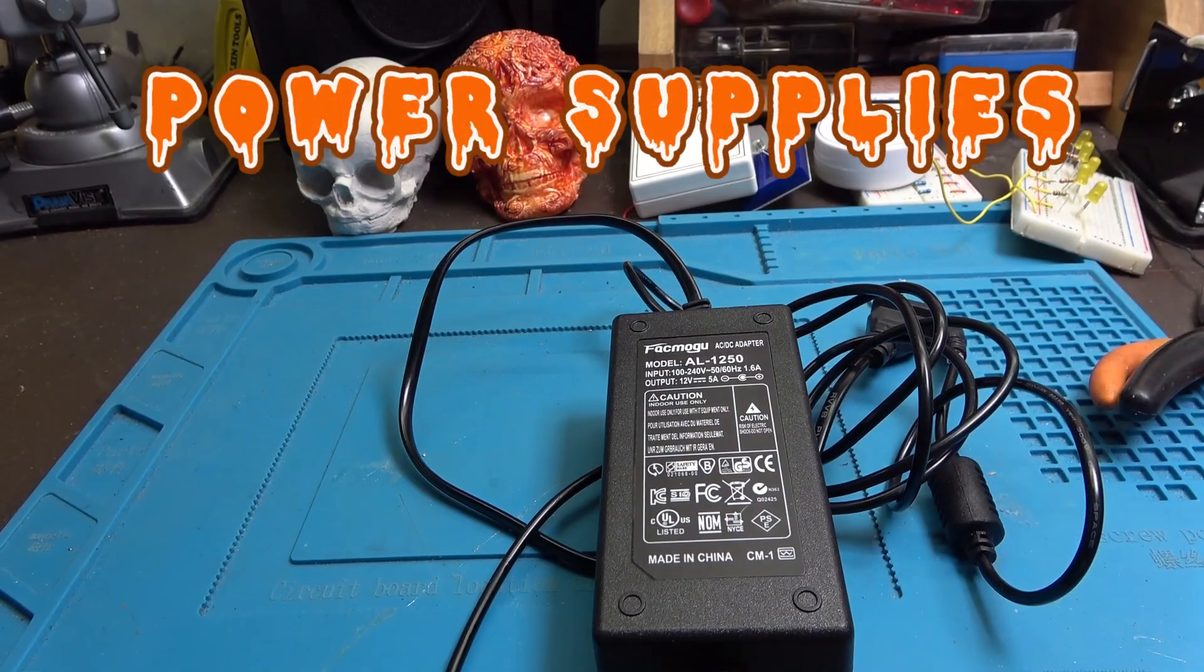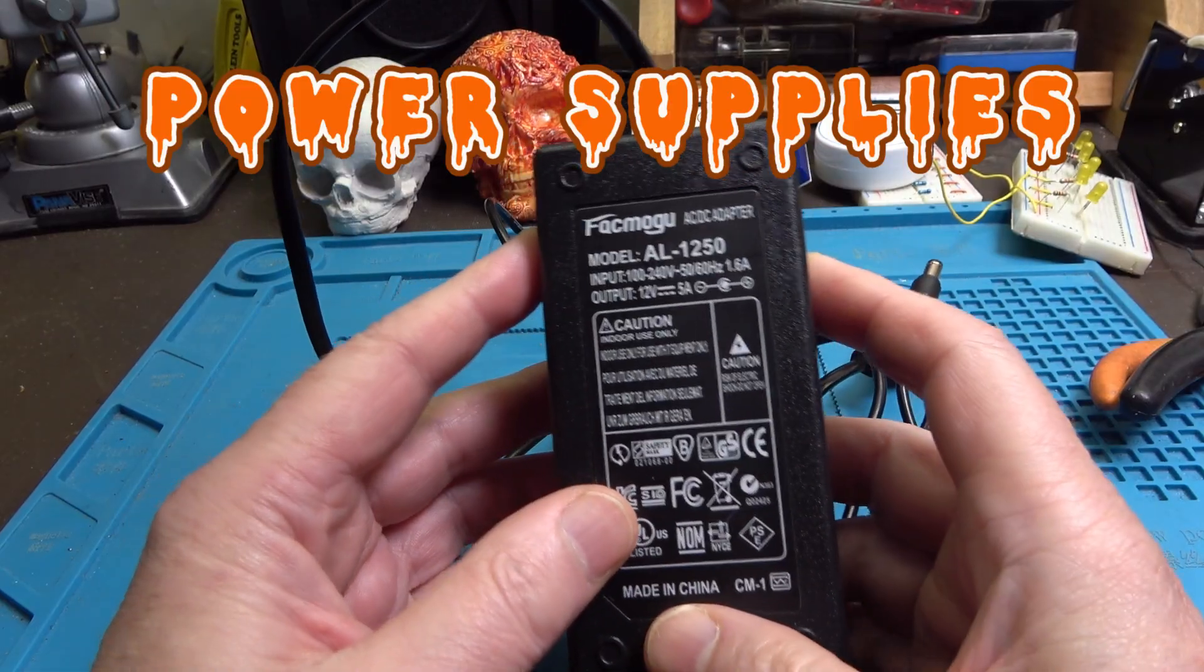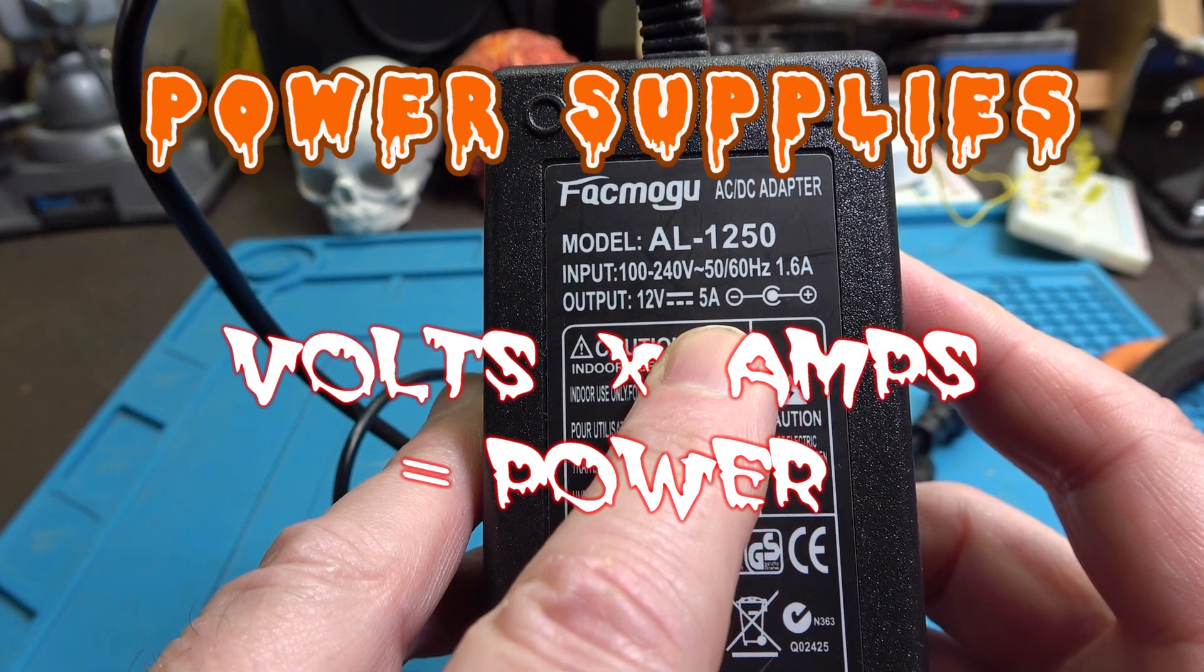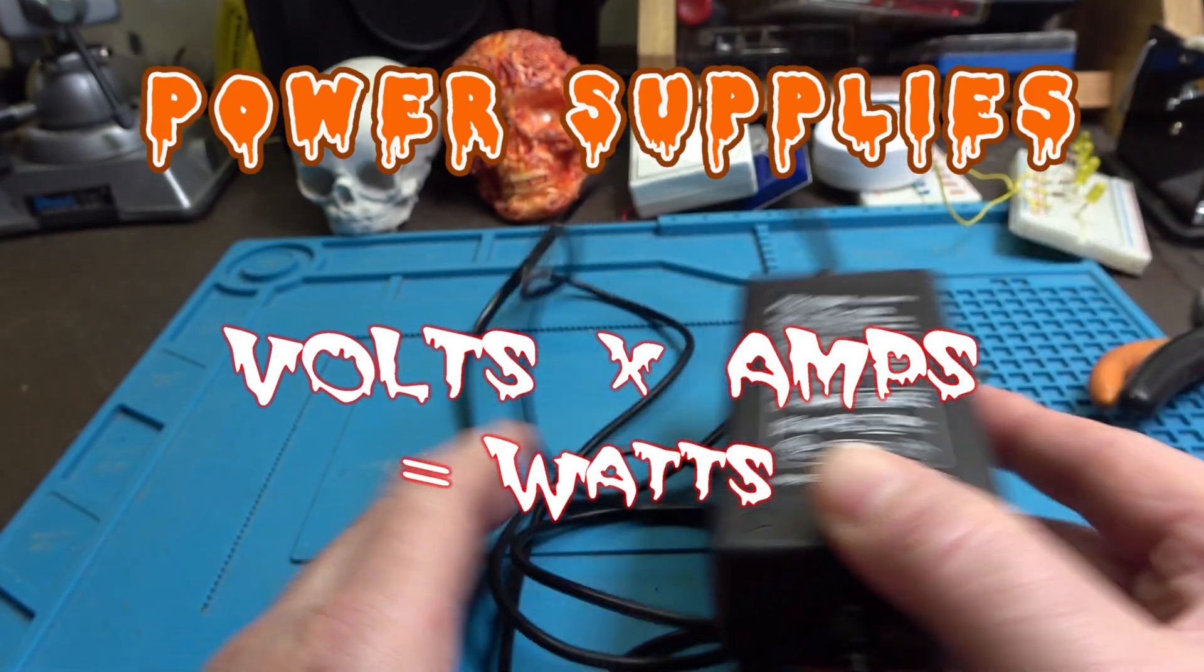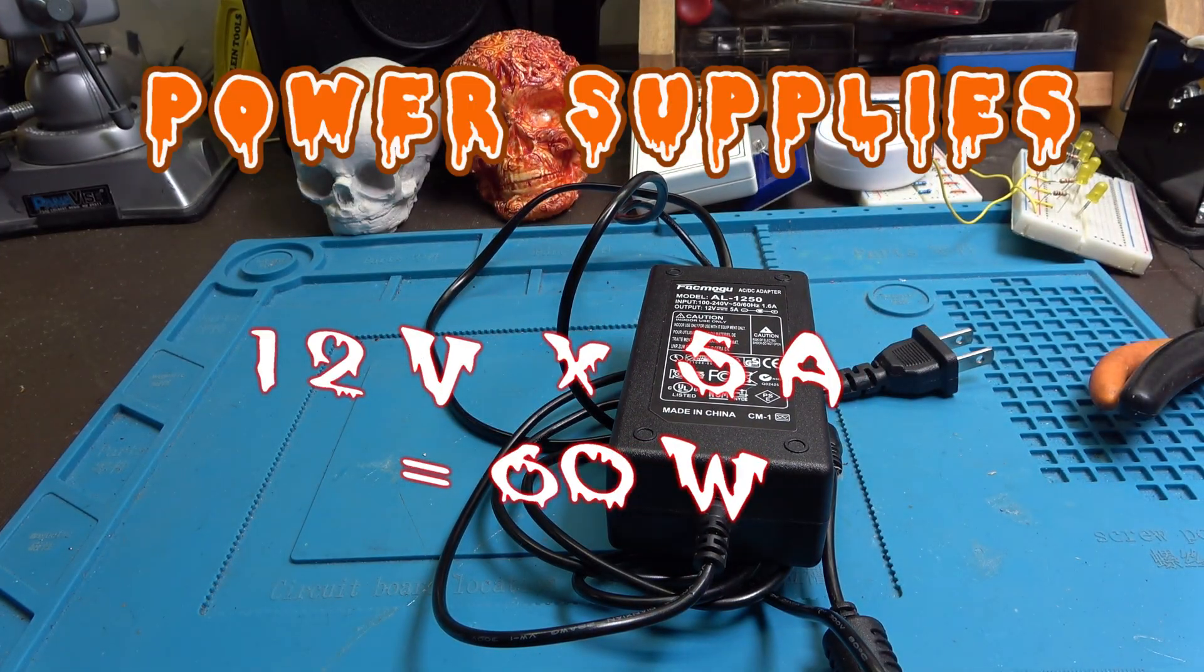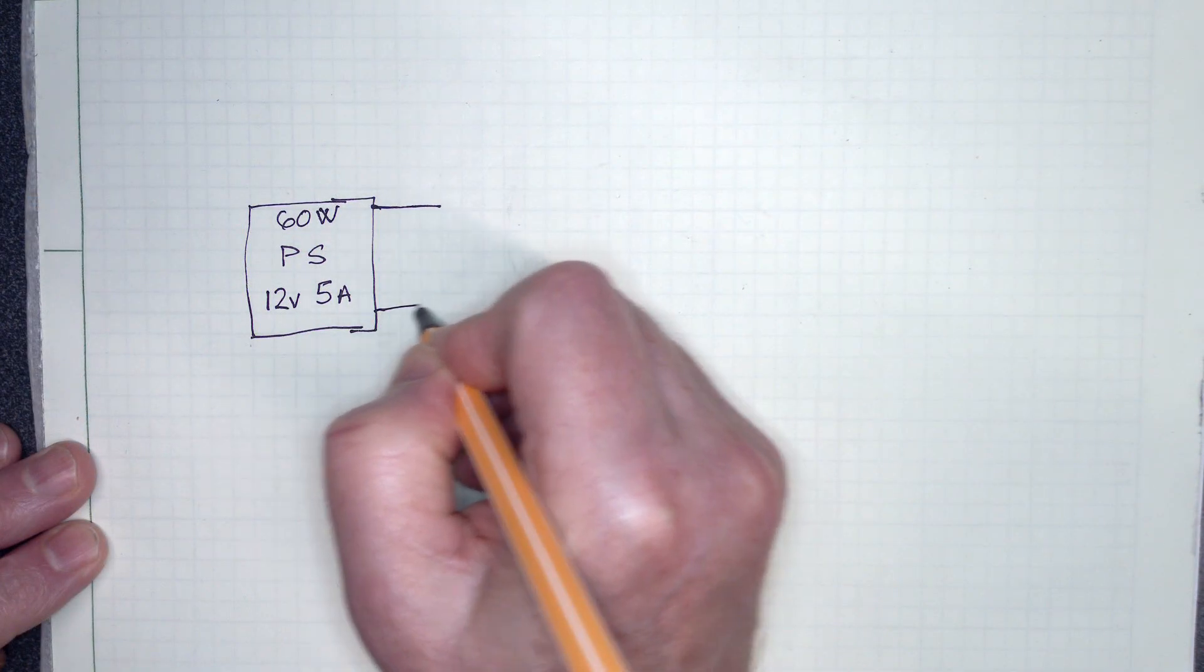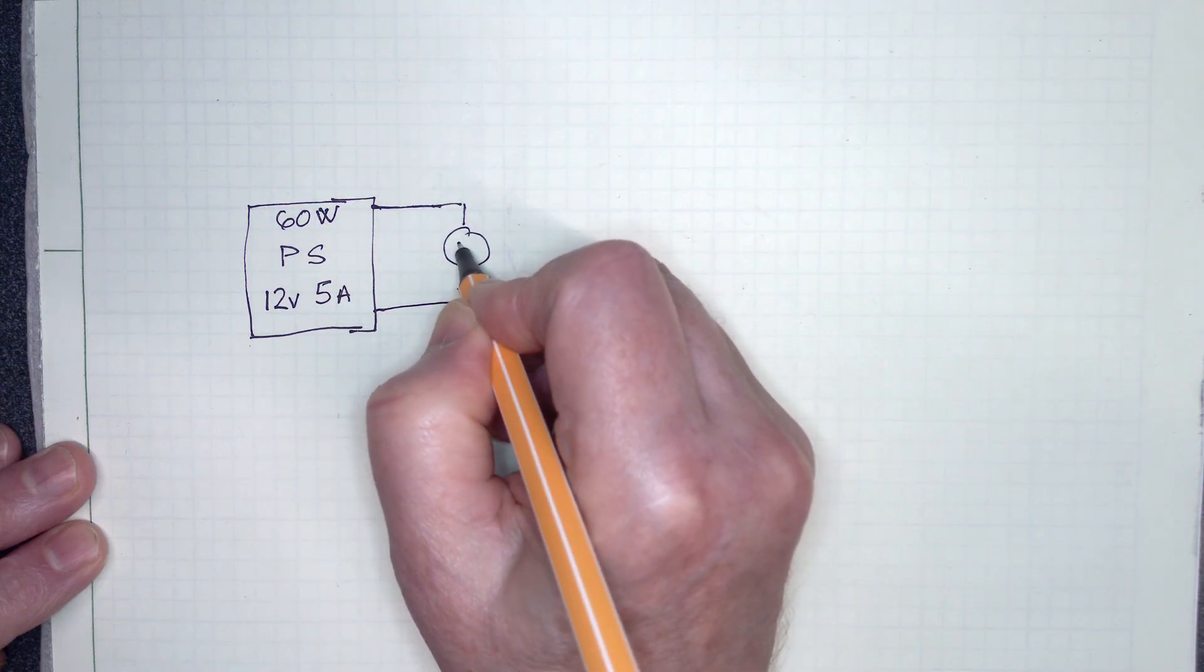A few words about power supplies. There are two quantities of importance when talking about power supplies: volts and amps. Power is measured by the multiplication of these two quantities, and the product is expressed in watts. For example, a 12 volt 5 amp supply is a 60 watt power supply. 12 times 5 is 60. An ideal power supply will always deliver the full voltage, but the circuit attached to the supply will only draw as much current as it needs.